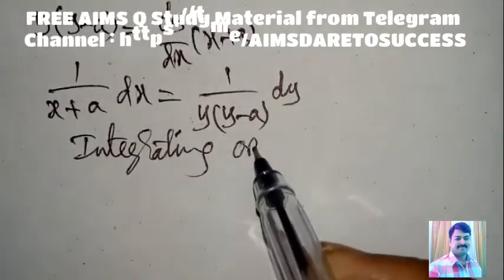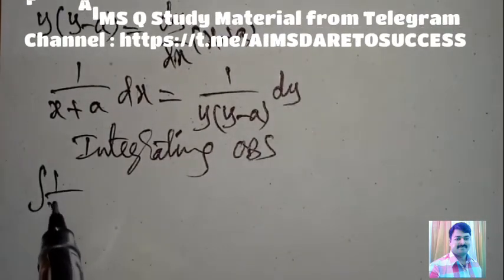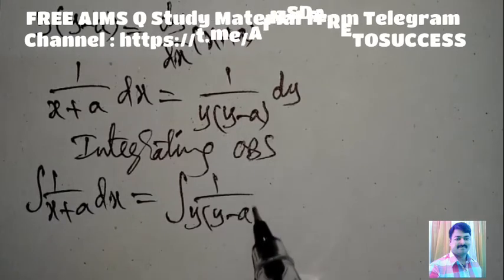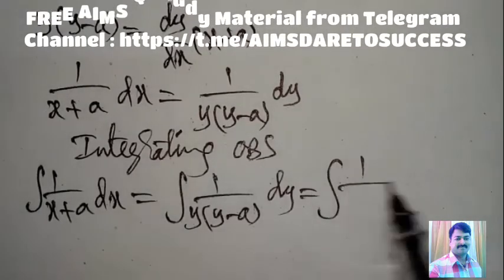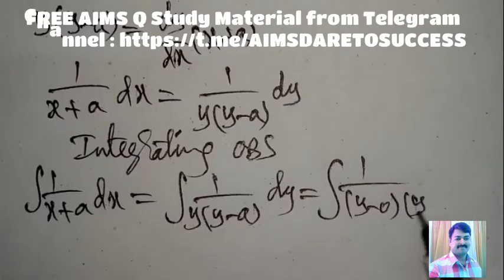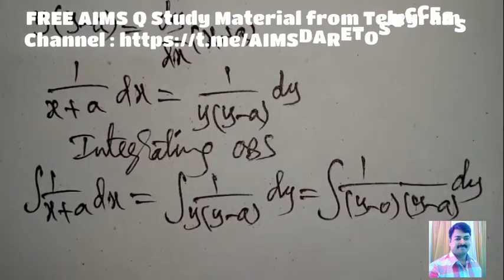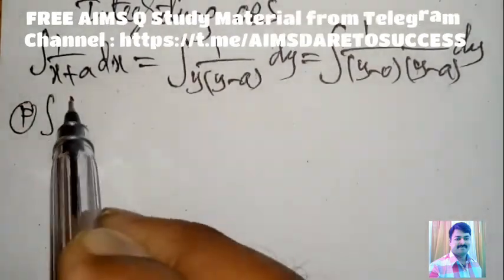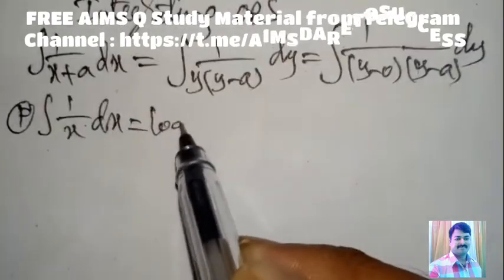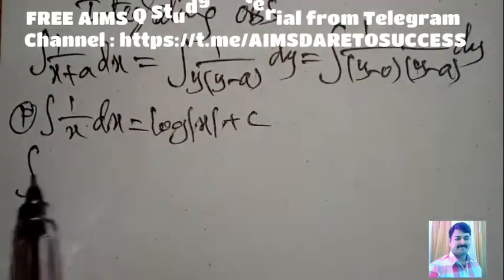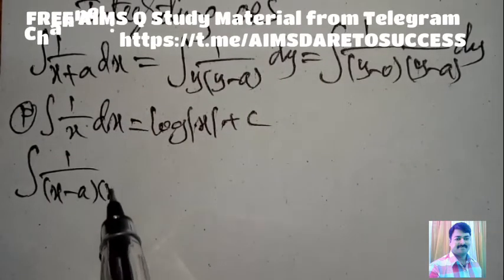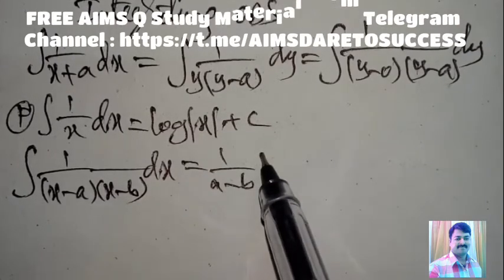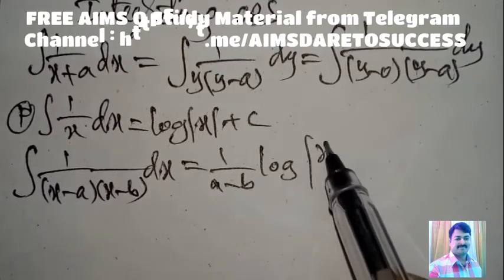Integral of 1/(x + a) dx = integral of 1/[y(y − a)] dy. The right side is written as 1/[(y − 0)(y − a)] dy. Formula: integral of 1/(x − a)(x − b) dx = 1/(a − b) × log|(x − a)/(x − b)| + C, where (x − a) is the smaller value.